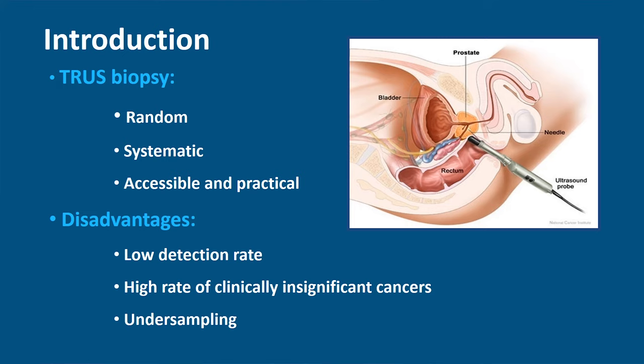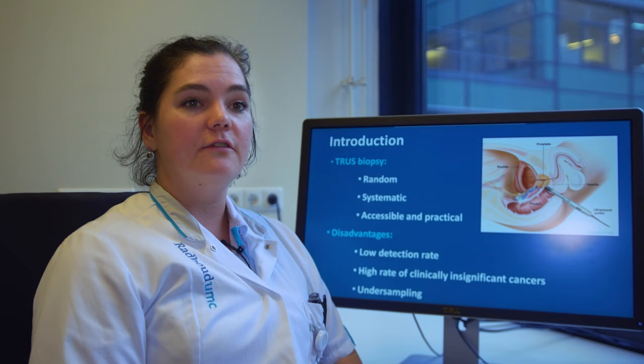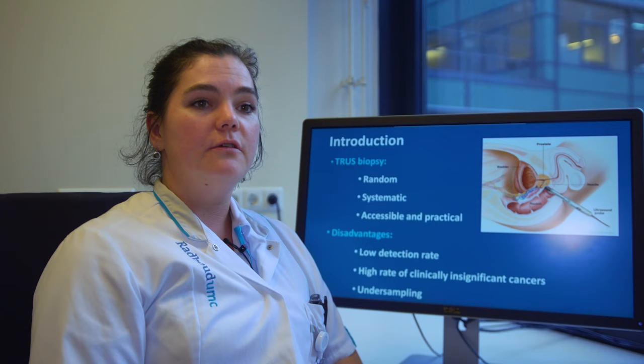This leads to a low detection rate, a relatively high rate of clinically insignificant cancers, and undersampling. As histopathology results obtained from TRUS-guided biopsy are commonly used in nomograms for risk assessment and prognosis in prostate cancer, this will lead to over-diagnosis of indolent prostate cancer and under-diagnosis of high-risk tumors, with subsequent wrong disease management.